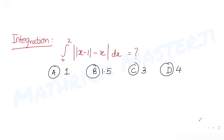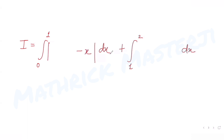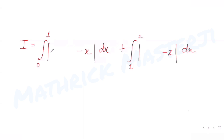Since the integral goes from 0 to 2 and the sign changes at x=1, I can split the limits as 0 to 1 and 1 to 2. Writing the function: in the first part the outer mod contains minus x, and since x minus 1 is negative for x less than 1, we replace it with minus of (x minus 1). For x greater than 1 the inner expression is positive, so we keep it as x minus 1.